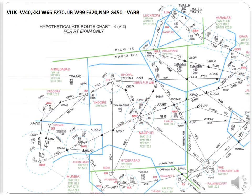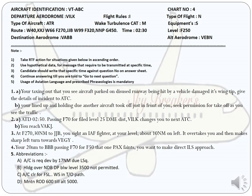Now we'll do the questions. The header and a note are given — just pause and go through it. They give five questions to be answered in ascending order. Question 1 Alpha: You are taxiing out and you see an aircraft parked on a disused runway being hit by a vehicle, damaging its wingtip. Give details of the incident to ATC. The four W procedure is very important for RTR.